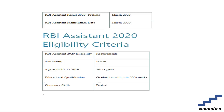The prelims result will come by March, and the mains will be held in March 2020. Now let us see the eligibility criteria. The candidate should be an Indian citizen, and the age as of 1st December 2019 should be more than 20 and less than 28 years.